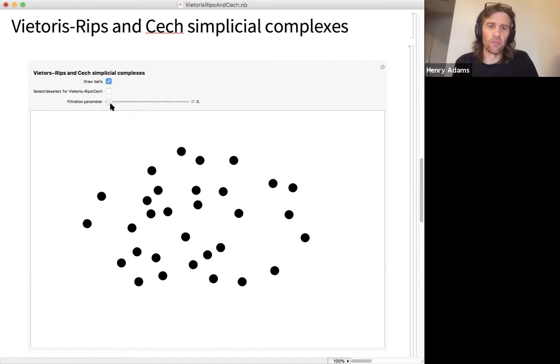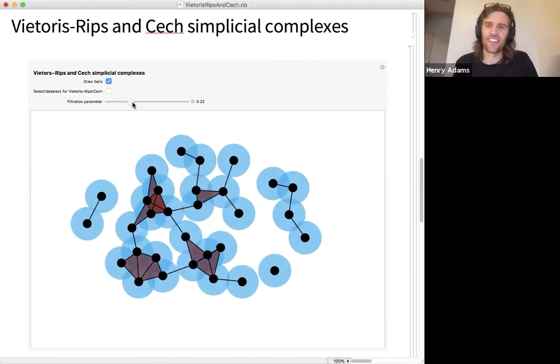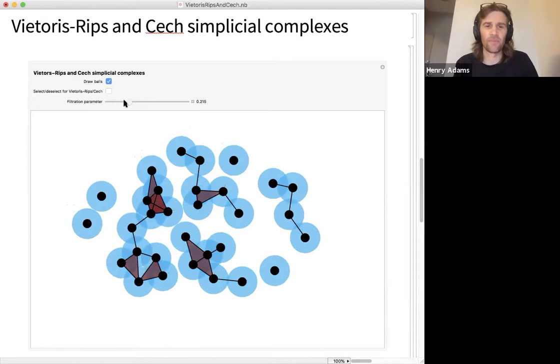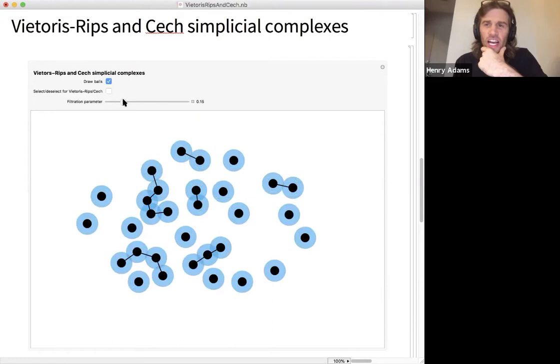So we've discussed how to get the shape of a data set. You might blur your vision, and mathematically you might try to encode that as rolling balls and seeing how the shape of the data changes as the balls grow.